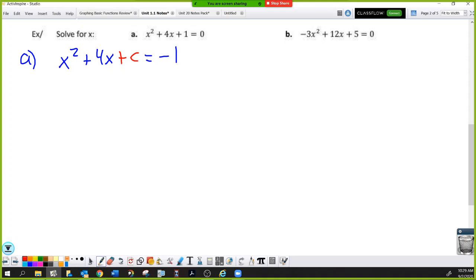My job is to figure out what this constant needs to be right there in order to create a perfect square trinomial. So I am going to add a number right there that creates a perfect square trinomial. But this is still an equation. So if I add a number on the left, I better add it on the right.